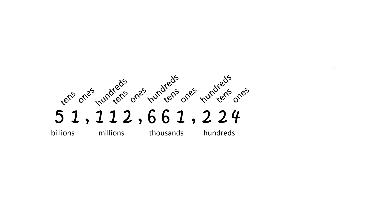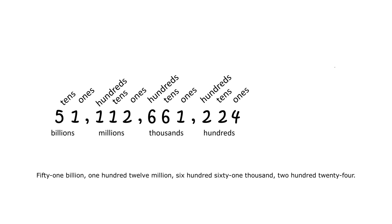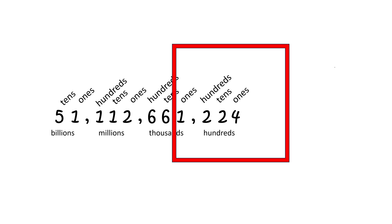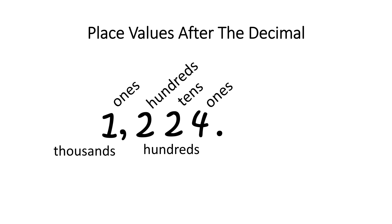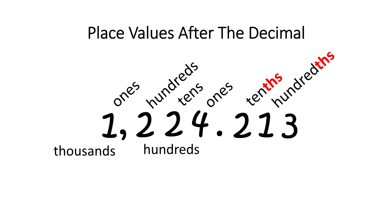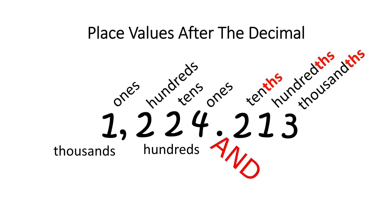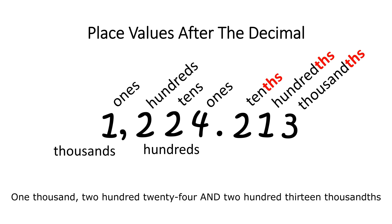Let's read this number correctly: we have 51,112,661,224. Next, we're going to zoom in and learn the number values to the right of the decimal. Let's place a decimal right here and write in a value of 2. What is this place value? It is not ones, but tenths — there is a distinguishable "THS" sound. I highlighted those letters in red. Let's add a number 1 and a number 3. The 1 is in the hundredths value, and the number 3 is in the thousandths value. Now we use the word "and" whenever we see a decimal. So the number reads: 1,224 and 2 hundred 13 thousandths.